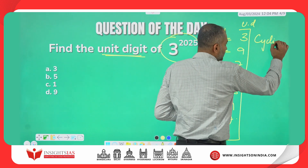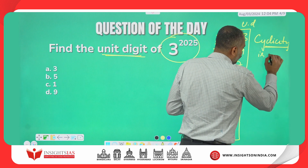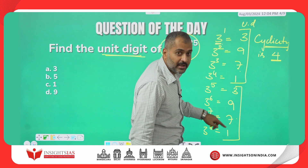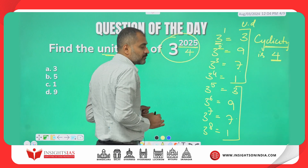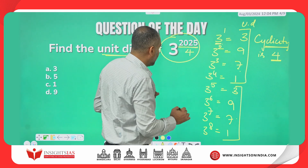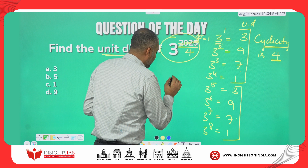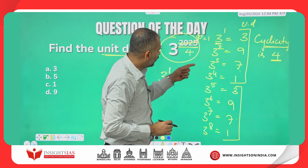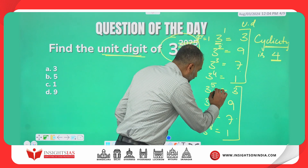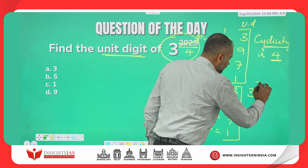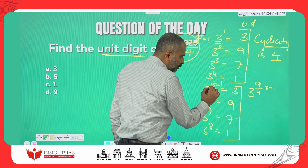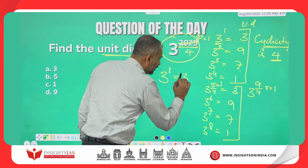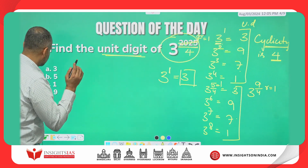Now, there is no other possibility other than 3, 9, 7, 1 repeating. What I will do is divide the power 2025 by 4. When I divide 2025 by 4, it is not divisible — there is a remainder of 1. The meaning of this is whatever you get for 3 power 1, the same unit digit you will get for 3 power 2025. Since 3 power 1 has unit digit 3, the answer is option A — which is 3.